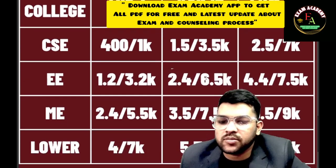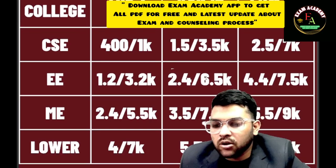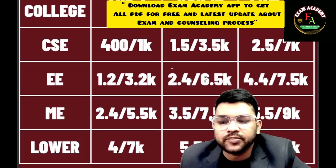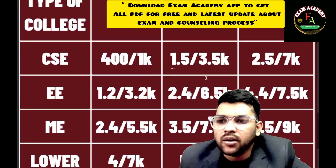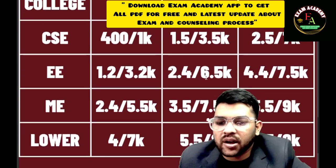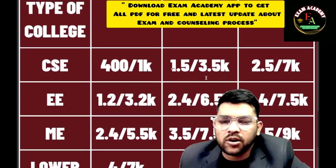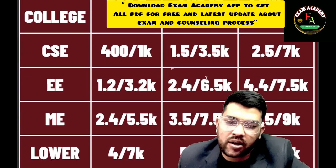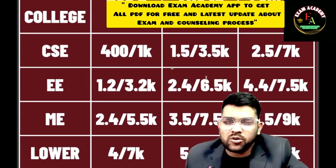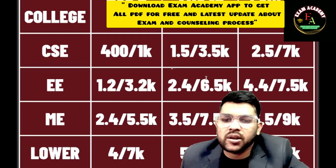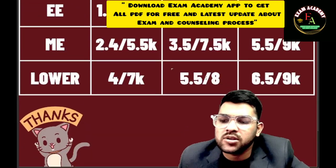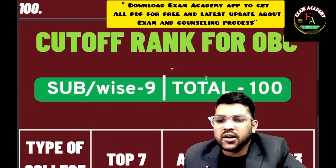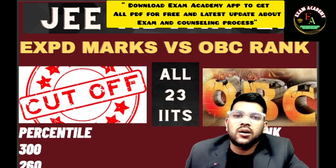For Mechanical Engineering, the cutoff ranks are around 2,400 for male and 5,500 for female in top 7 IITs; 3,500 and 7,500 for average IITs; and 5,500 and 9,000 for lower IITs. For other lower branches, approximately 4,000 and 7,000 in top 7 IITs; 5,500 and 8,000 for average; and 6,500 and 9,000 for lower IITs. Female students may get seats up to around 9,200 rank.